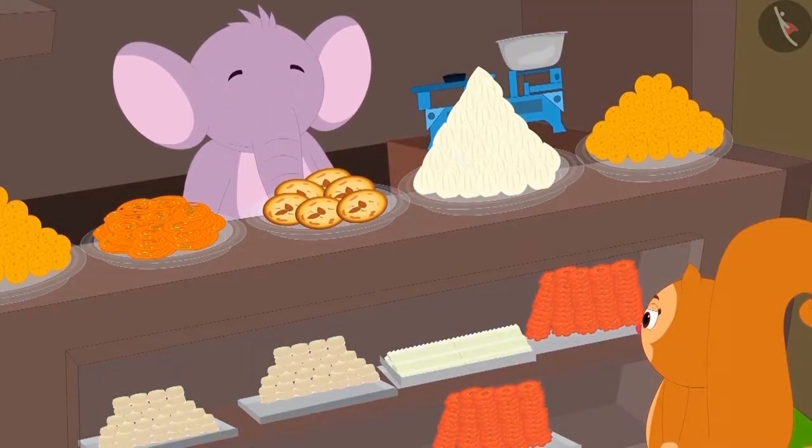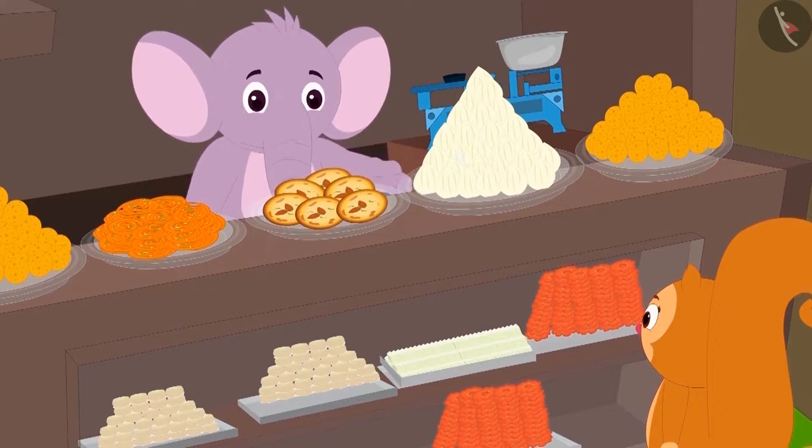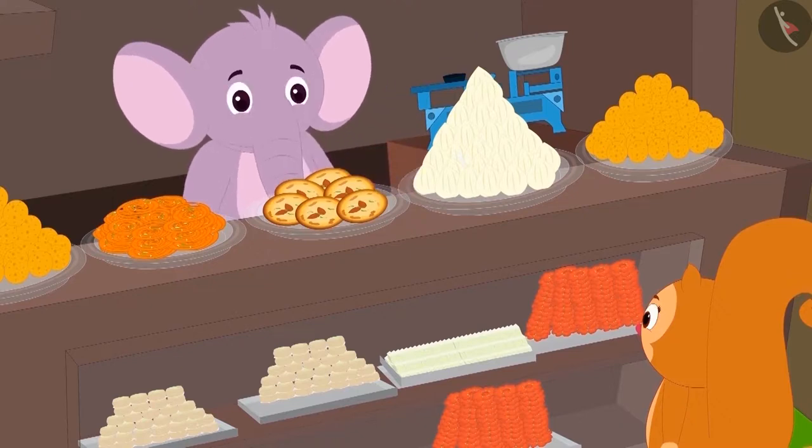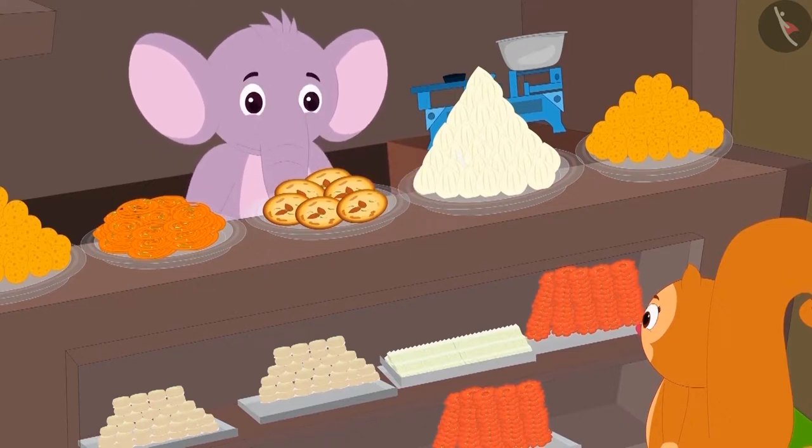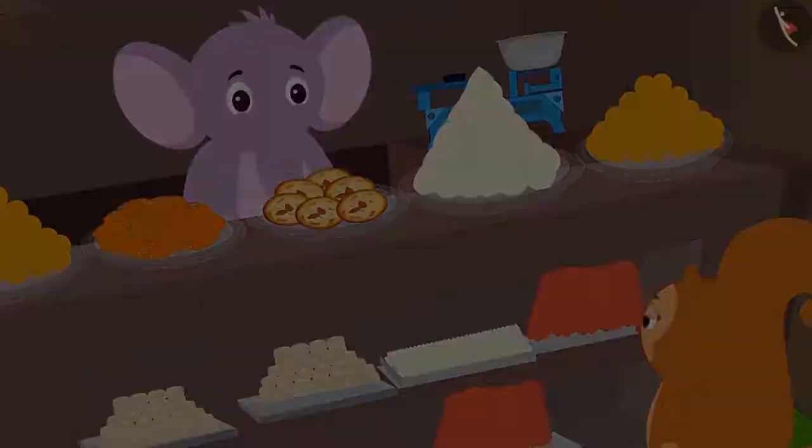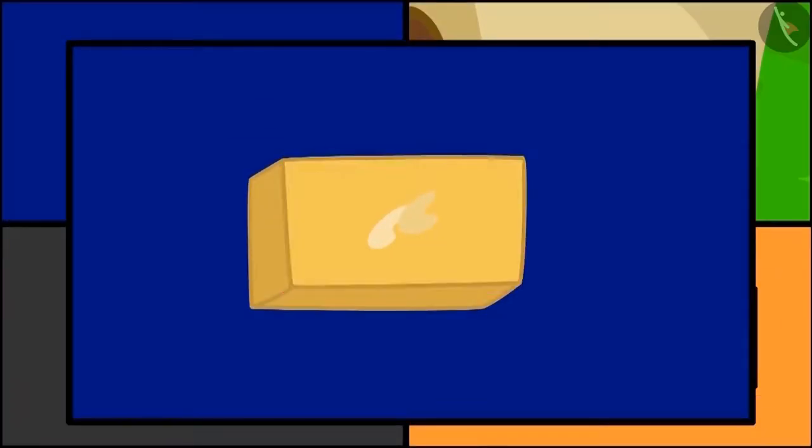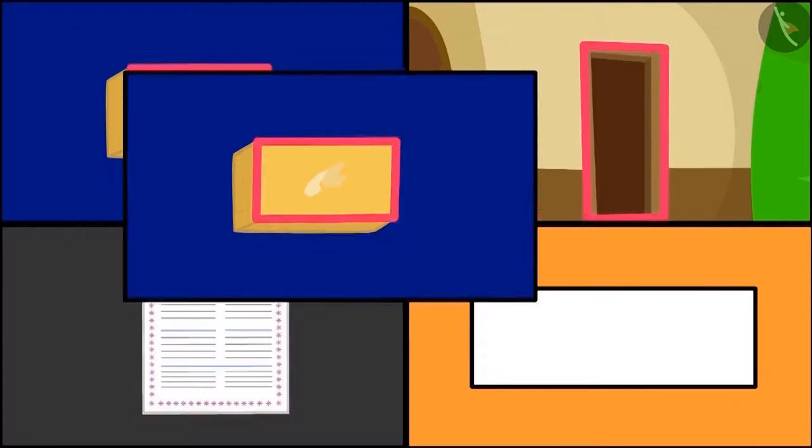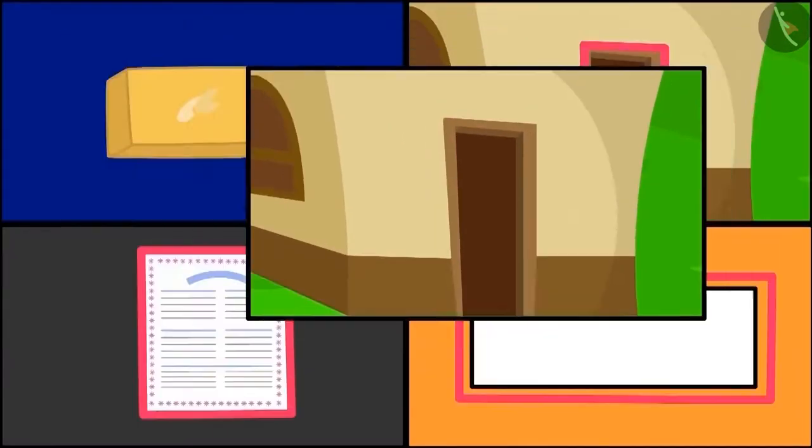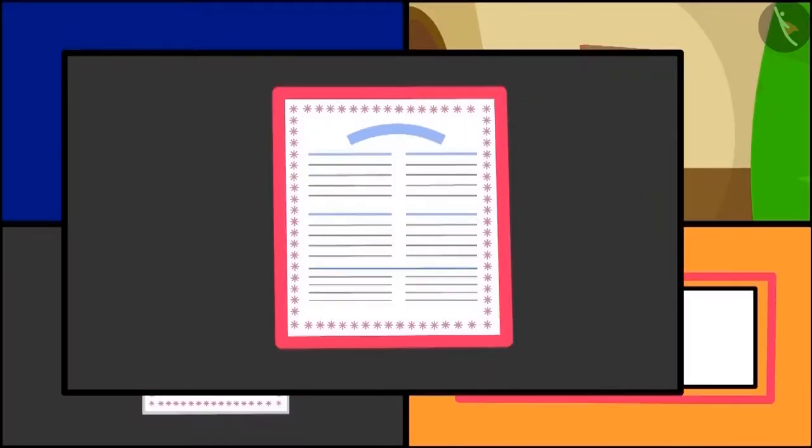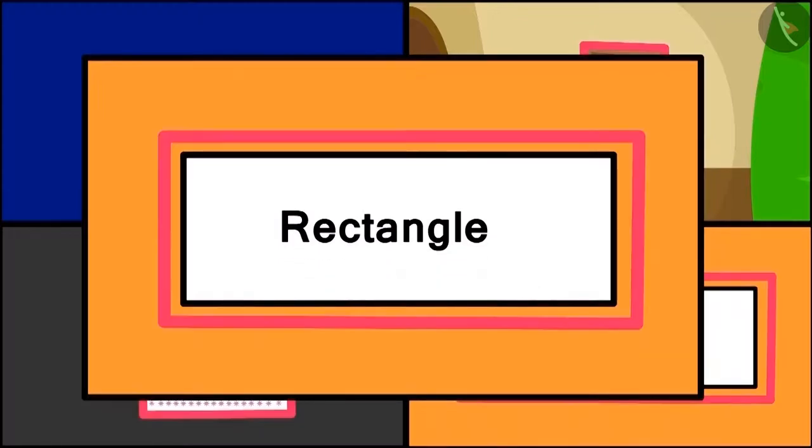Now Appu explains to Chanda through a poem where all can she see a rectangle shape. This Barfi is like a rectangle. Door is a rectangle and same is a page. Rectangle is the name of the shape and it has four sides.